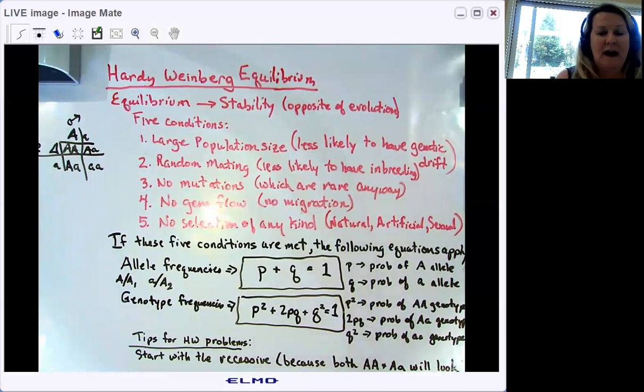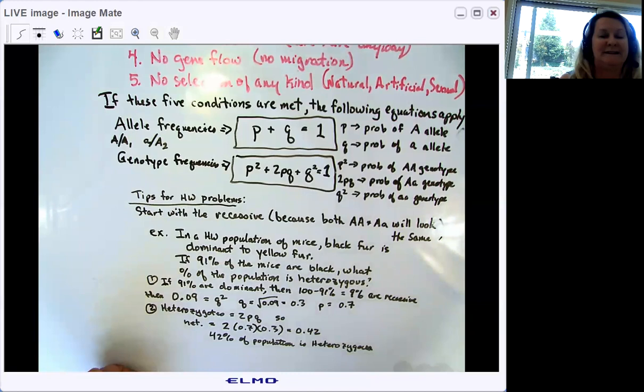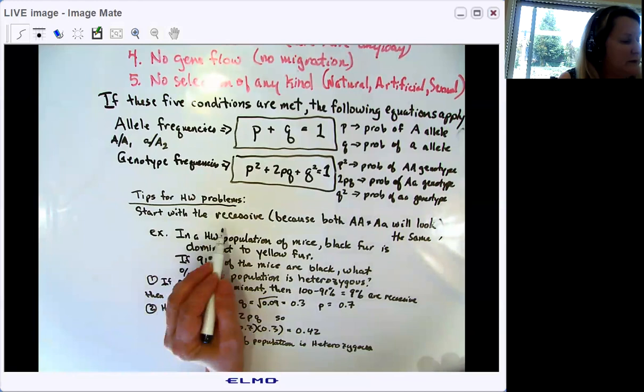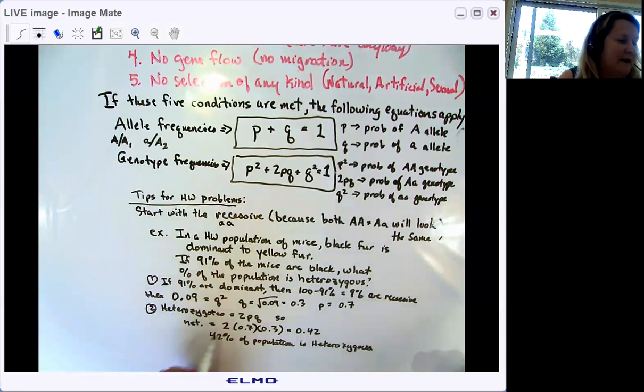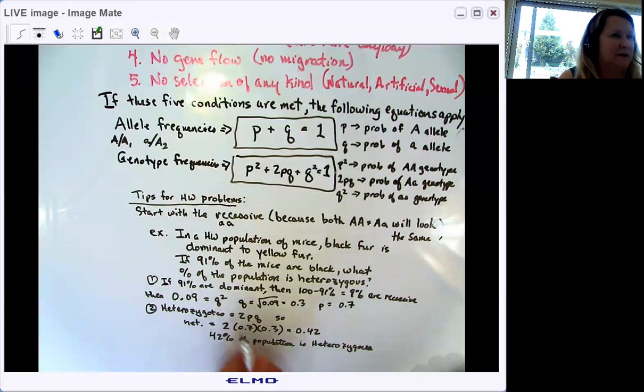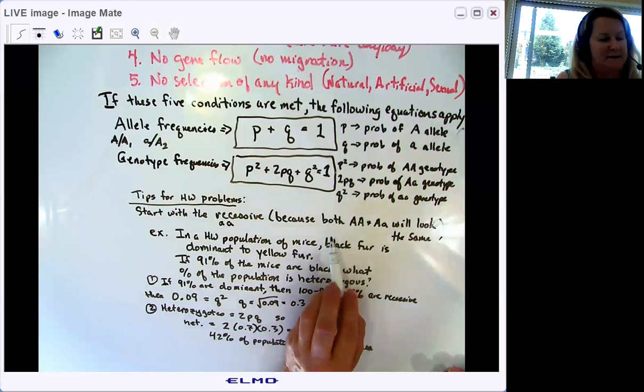I think the best tip I can give you for solving Hardy-Weinberg problems is to start with the recessive phenotype. And here's why. There's only one way to get a recessive phenotype - that's to be little a, little a. And all the recessives have the same genotype. So if you look at an individual and they're recessive, you know what its genotype is.